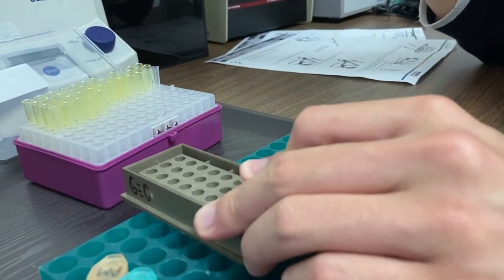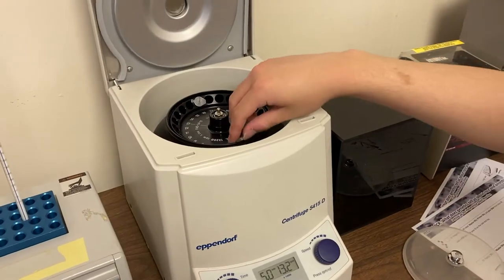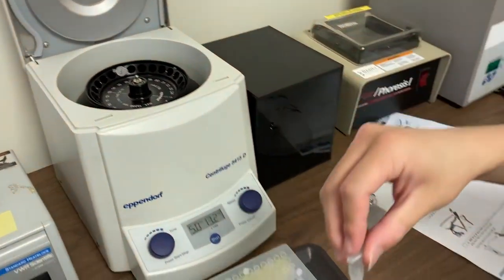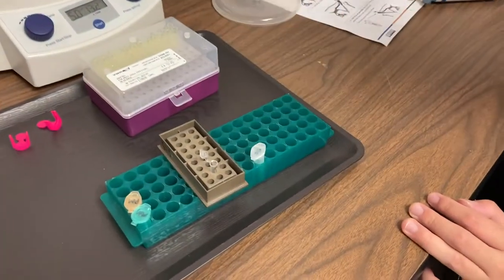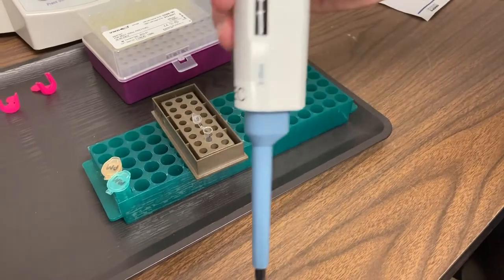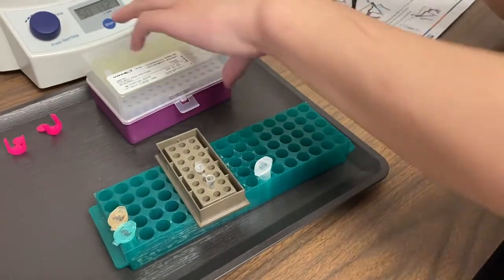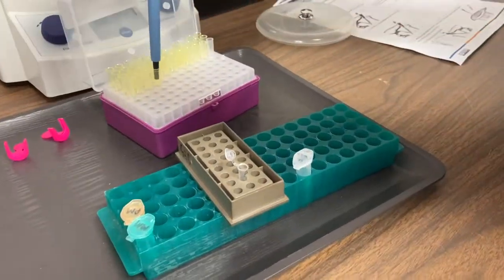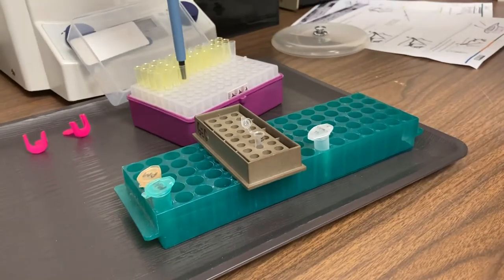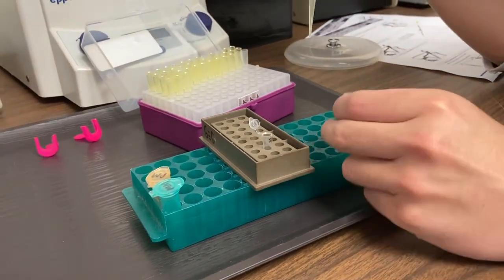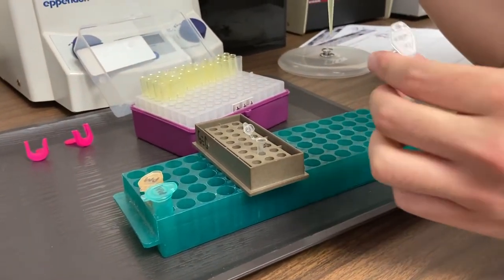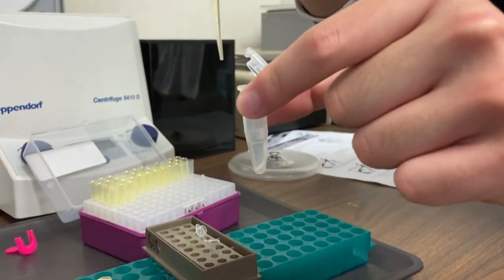So, we've added our primer mix and our master mix to our tube. Now we have to retrieve our DNA from the centrifuge. You're going to set your micropipet to 10 microliters and get a fresh tip.